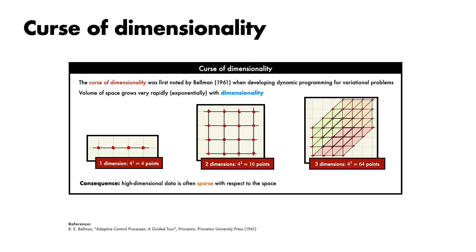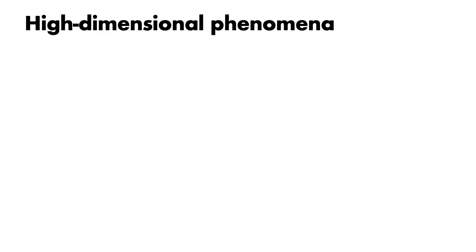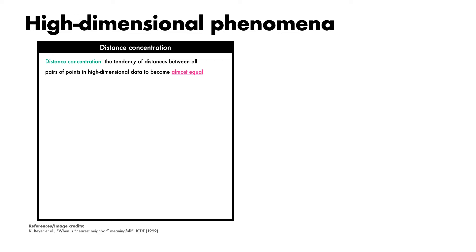As a consequence, high dimensional data is often very sparse with respect to the space that forms its home. Broadly speaking, high dimensional spaces cause mischief in machine learning, particularly for the broad families of methods that rely on having plenty of nearby neighbors in their input space or their embedding space in order to make good decisions. Among the various properties of vectors in high dimensional spaces linked to the curse of dimensionality, one widely observed effect is known as distance concentration, which refers to the tendency of distances between all pairs of points in high dimensional data to become almost equal. This has potential consequences for methods that rely on nearest neighbors.